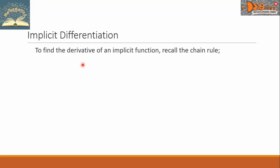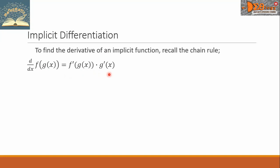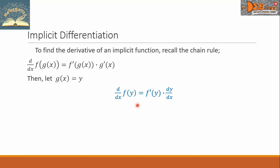To find the derivative of an implicit function, recall the chain rule. The formula is: d over dx of f of g(x) equals f prime of g(x) times g prime of x. This time, we're going to let g(x) equal y. So we have d over dx of f(y) is equal to f prime of y times dy over dx.